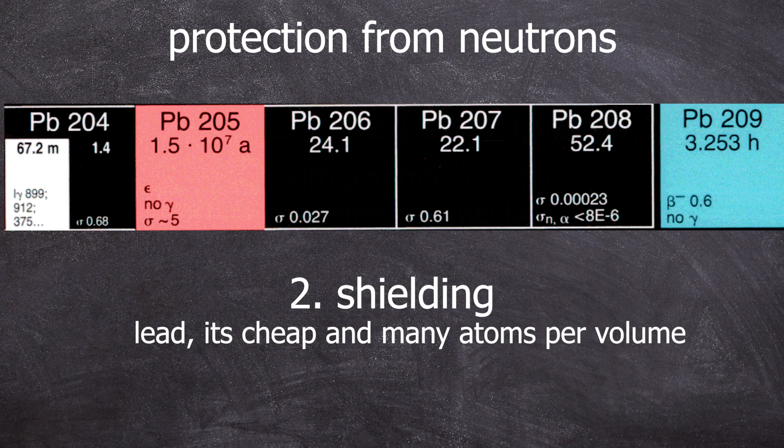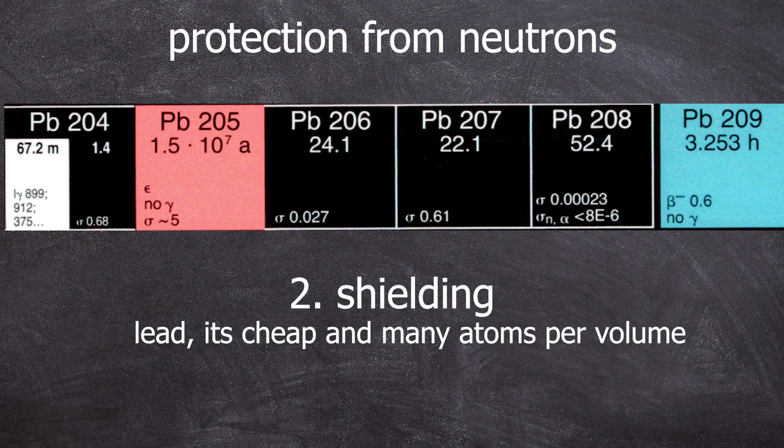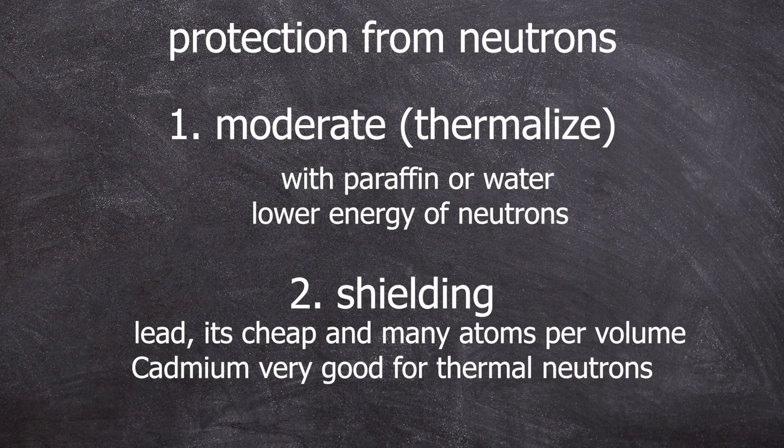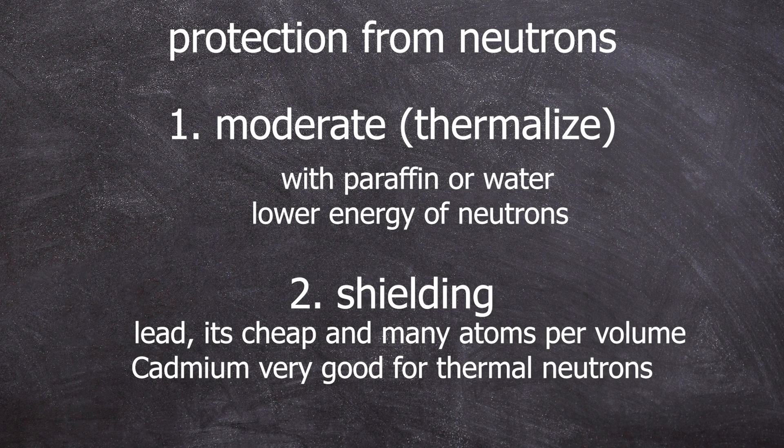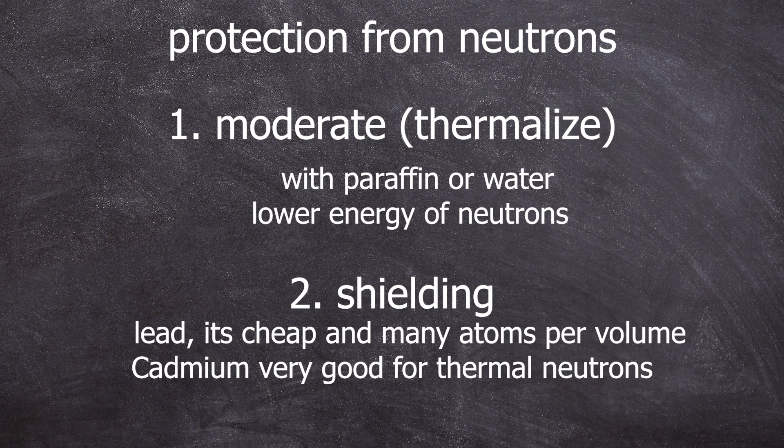But won't the lead eventually become radioactive then? Neutron capture cross-section is very low, but yes, over time, a tiny amount of bismuth will form, which is very long lived. The best shielding for thermal neutrons is cadmium. It has a very high absorption cross-section for thermal neutrons. Fast neutrons will go right through them, but thermal neutrons are pretty much completely shielded with just a few centimeters of cadmium.